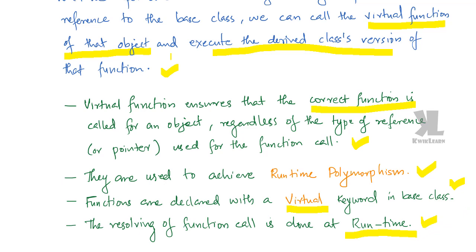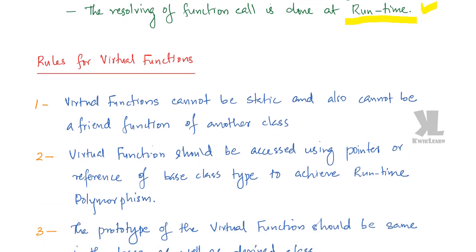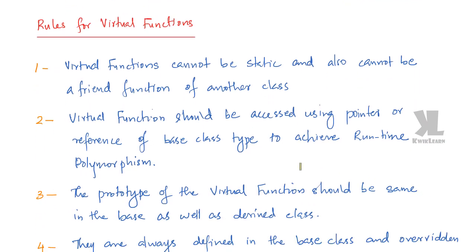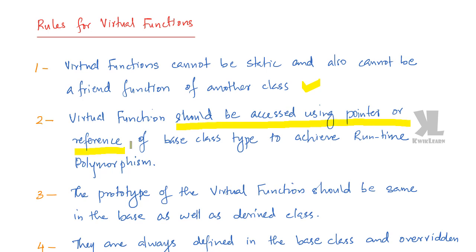Now we have some rules for virtual function. The first rule is virtual functions cannot be static and also cannot be a friend function of another class. The second rule is virtual function should be accessed using pointer or reference of the base class type to achieve runtime polymorphism.